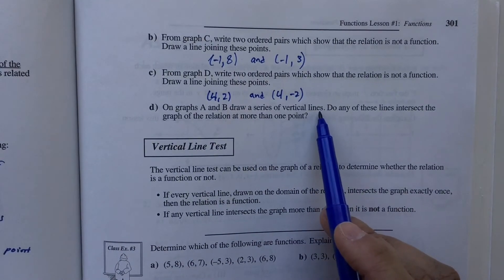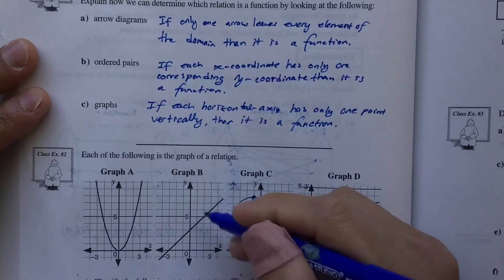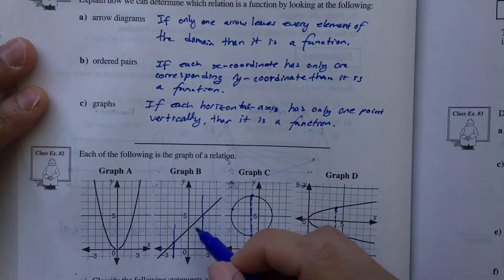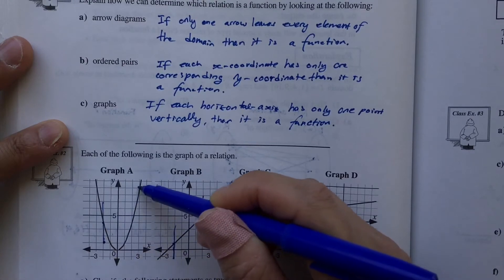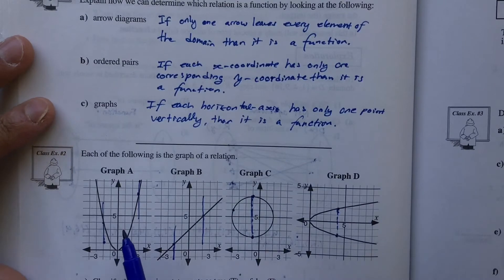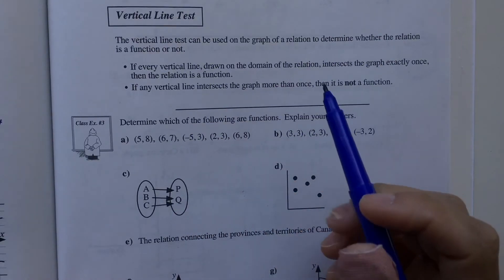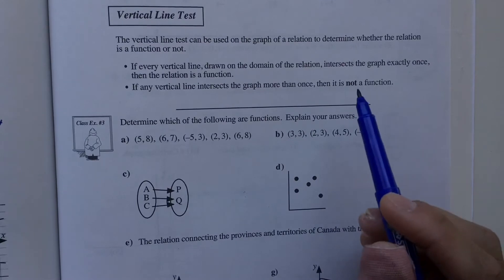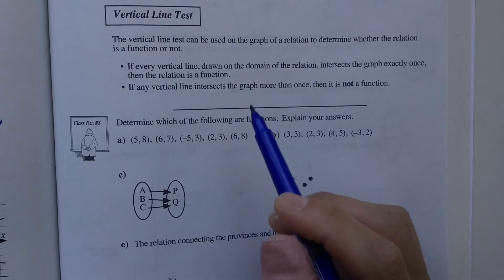On graphs A and B, drawing a series of vertical lines shows each line intersects the graph at only one point. On graphs C and D, the lines intersect at more than one point. This is the vertical line test: draw vertical lines on the domain of the relation — if every line intersects only once, it is a function; if any line intersects more than once, it is not a function.